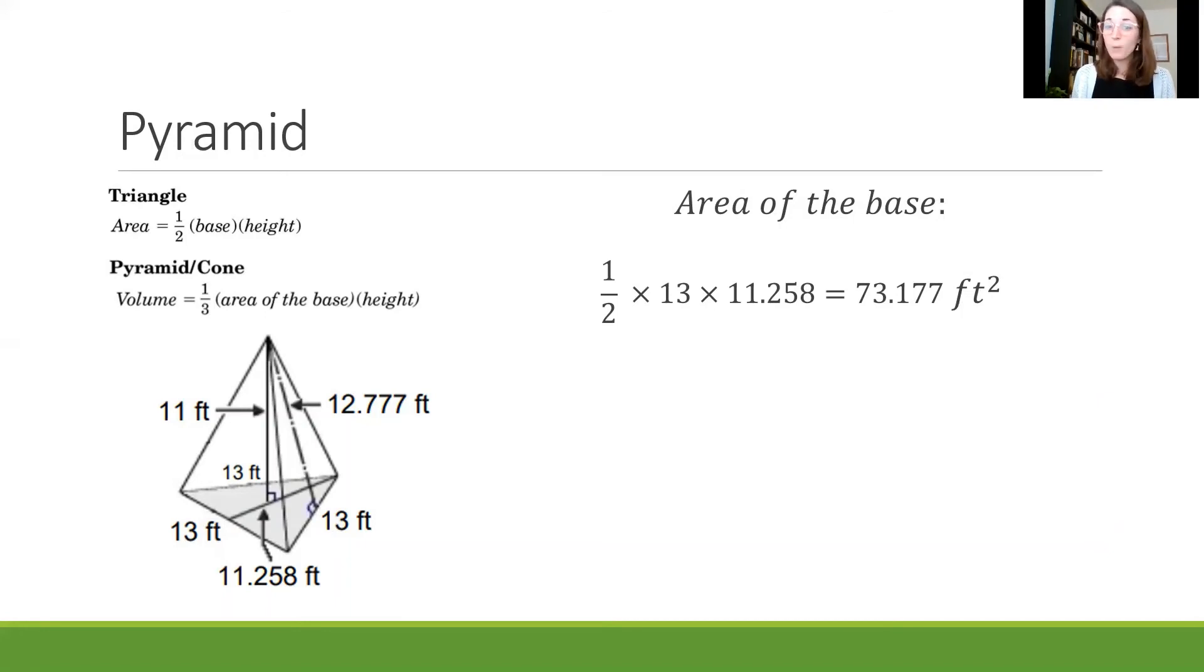And then we need to know what the height of that triangle. Now watch out because there is a height to this pyramid as well but right now we don't need that height, we need the height of that base which is 11.258. So we're going to multiply one half times 13 for the base and 11.258 for the height and we get 73.177 feet squared.